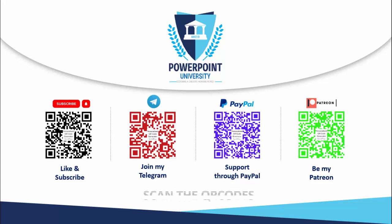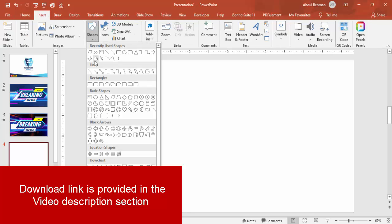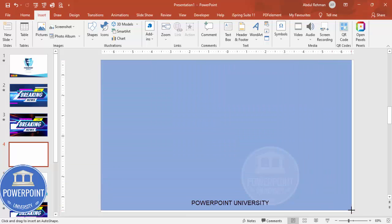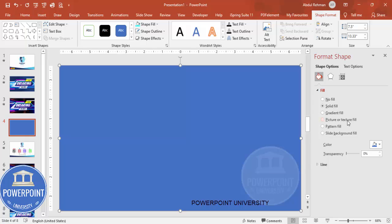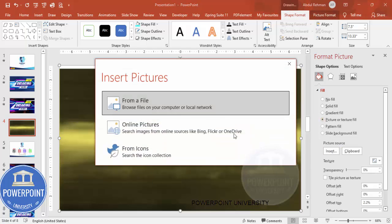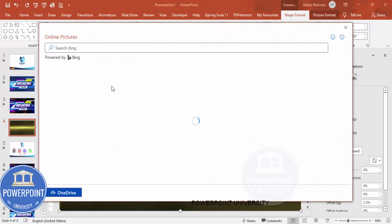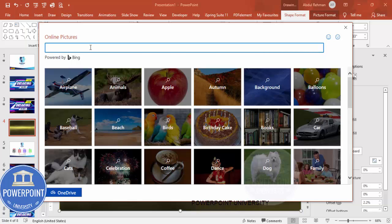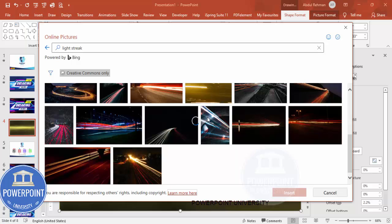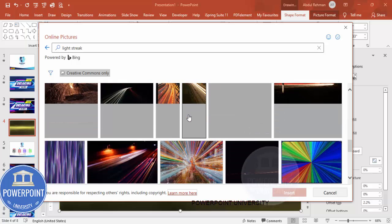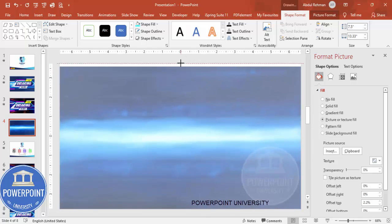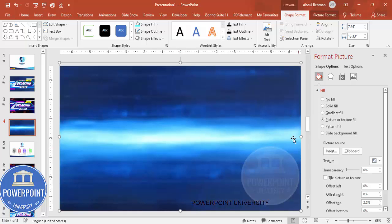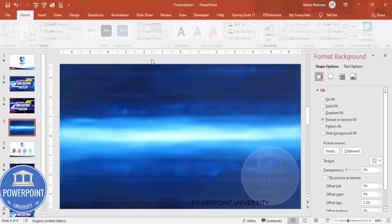Let's start the tutorial. Add a new slide, go to Insert > Shapes, select the rectangle and cover the whole slide. Then make the shape outline 'no outline.' Right-click and go to Format Shape. Under 'Picture or Texture Fill,' choose that option, click Insert, and select Online Pictures. Search for 'light streak' and choose a background image. Click Insert and you end up with a shape covering the slide.